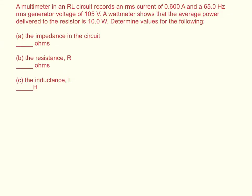A multimeter in an RL circuit records an RMS current of 0.6 amps and a 65 Hertz RMS generator voltage of 105 volts. A wattmeter shows that the average power delivered to the resistor is 10 watts. Determine the values for the following.